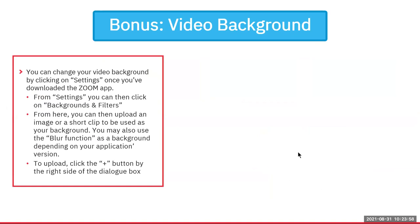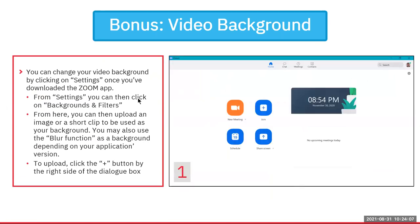For video backgrounds: you can change your background by clicking settings once you've downloaded the Zoom app. From your profile in the top right corner, click Settings, then Background and Filters. If you haven't uploaded an image yet, click the Add button to open your files and select pictures you want as your background. Once uploaded to Zoom, just click it to apply it.